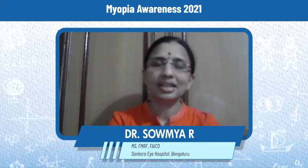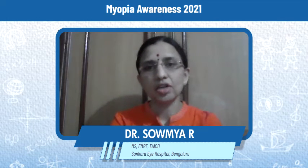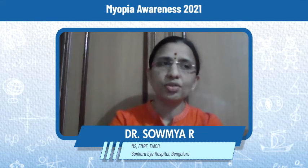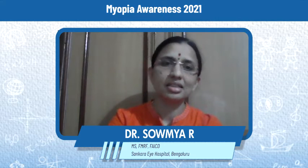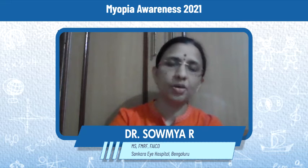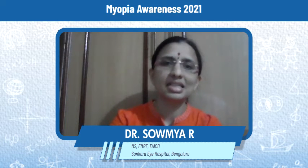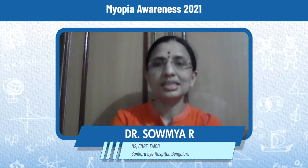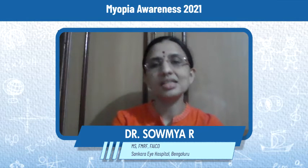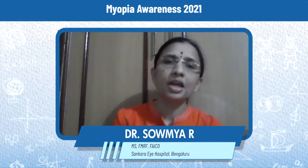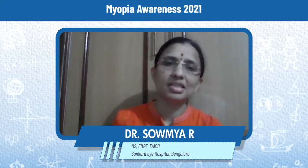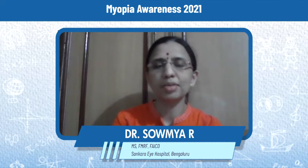Third, decrease near activity for the child. Since online classes are going to continue for a considerable amount of time, we need to make them safer for the child's eyes. Avoid using tablets or phones for online classes; instead use a laptop projected onto a desktop monitor where the child sits at a distance of one and a half to two meters. Where possible, put online classes on a smart TV so the child watches from a far distance, thus controlling the hours of near activity.